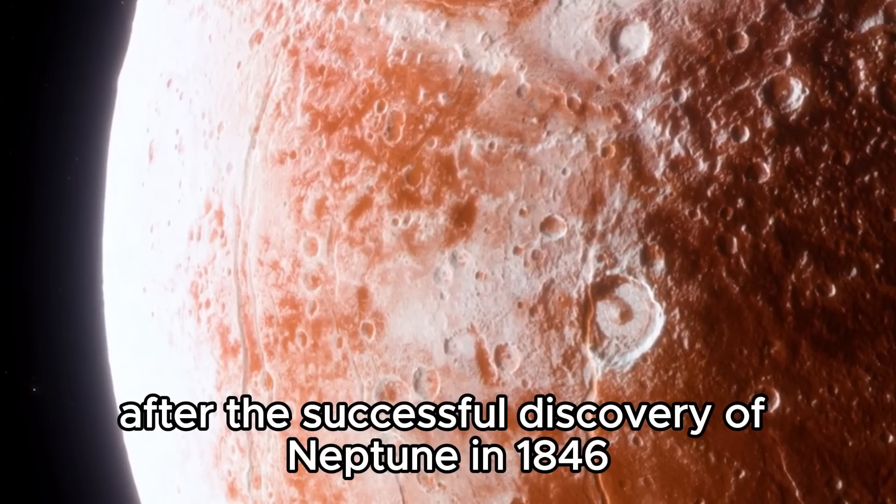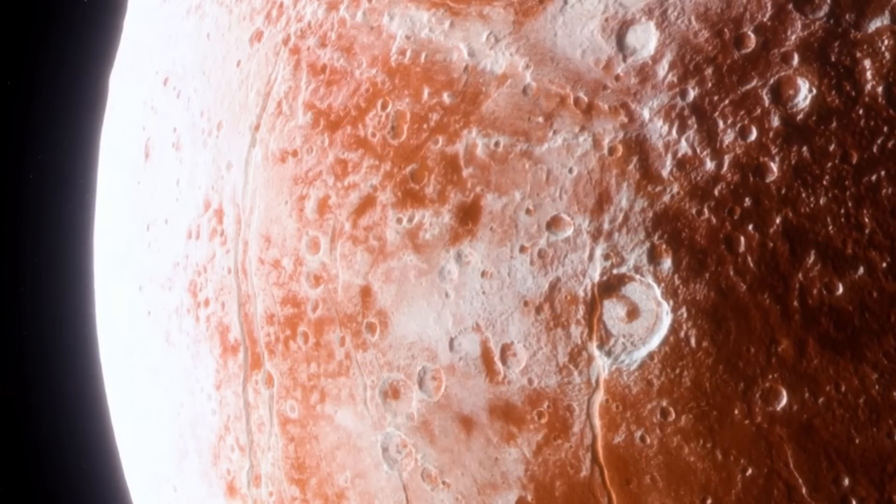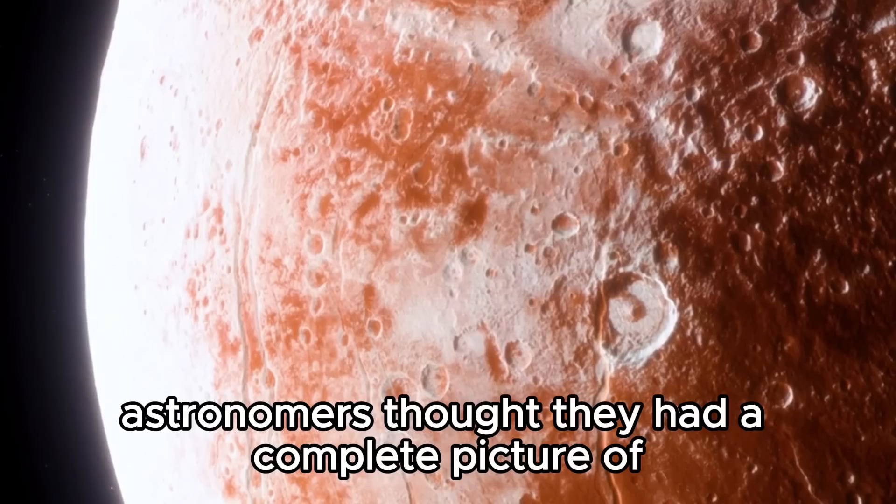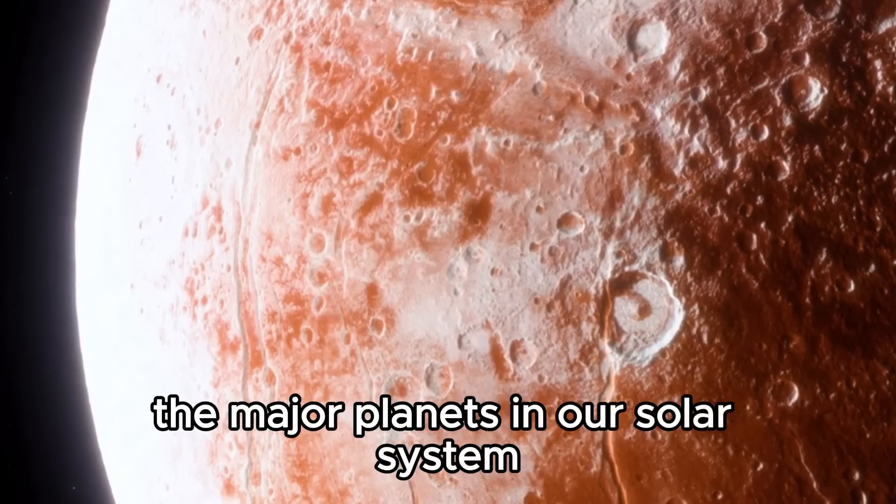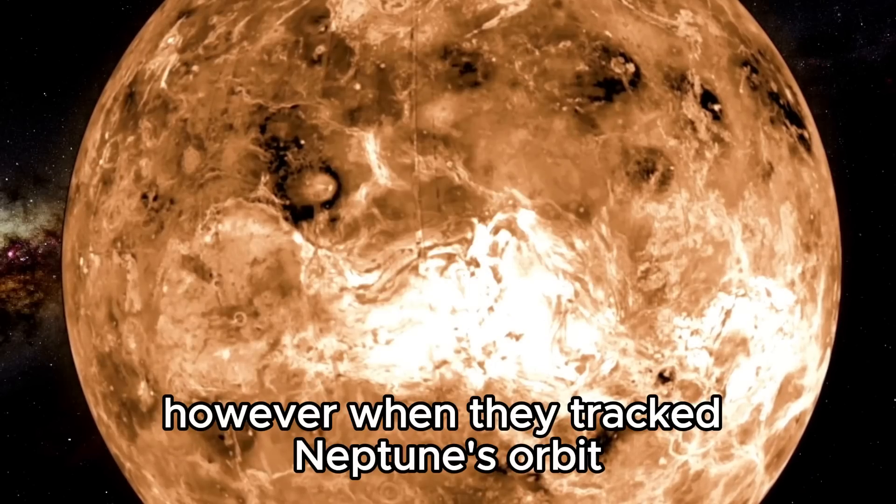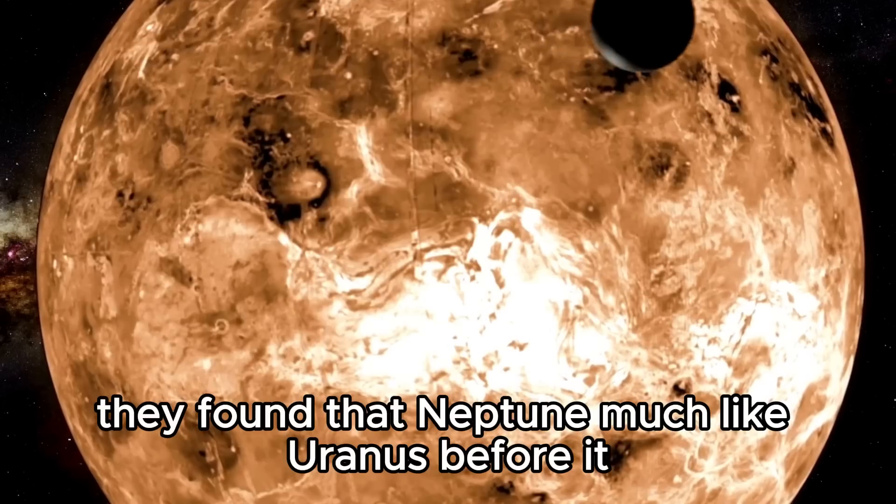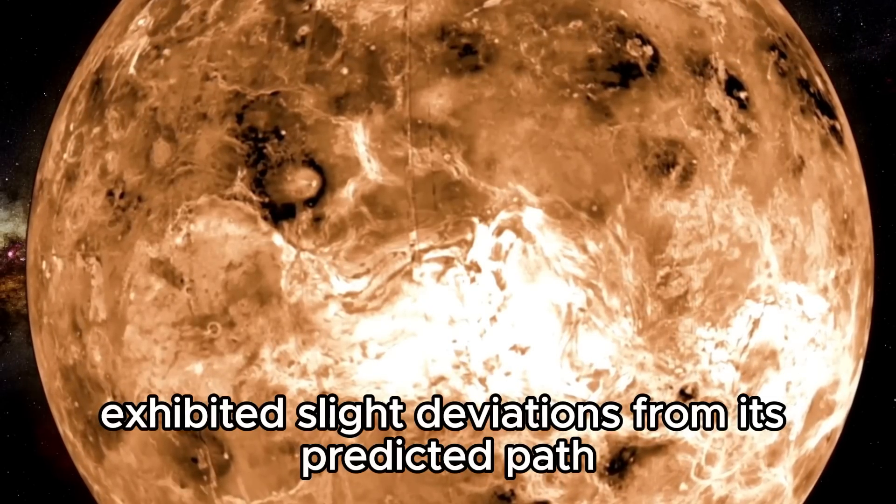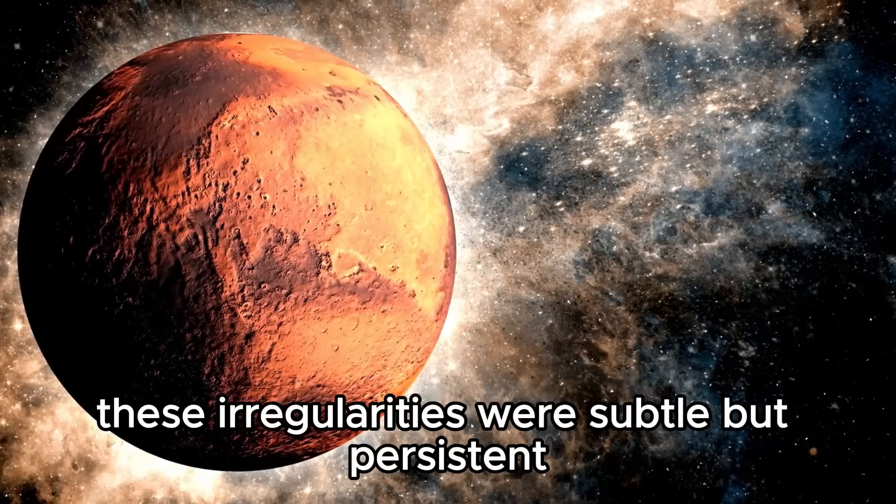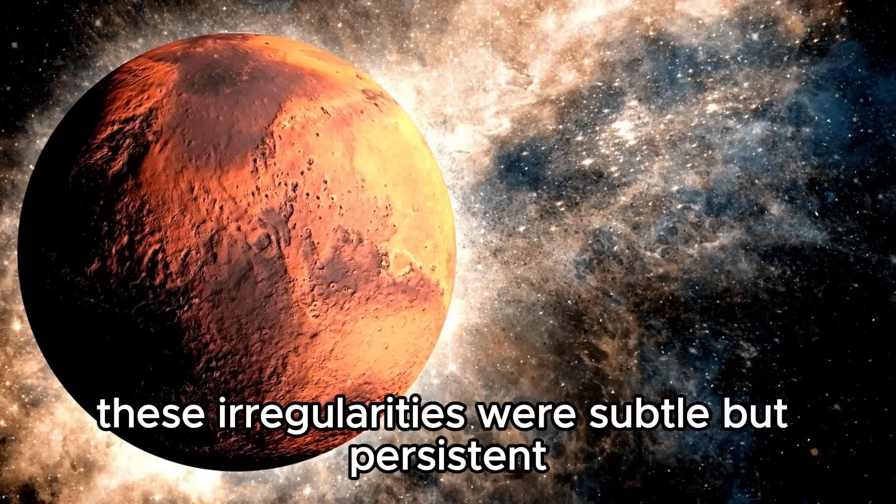After the successful discovery of Neptune in 1846, astronomers thought they had a complete picture of the major planets in our solar system. However, when they tracked Neptune's orbit, they found that Neptune, much like Uranus before it, exhibited slight deviations from its predicted path. These irregularities were subtle but persistent.